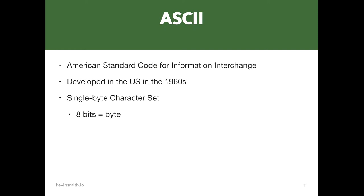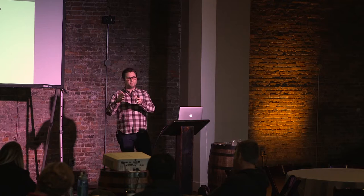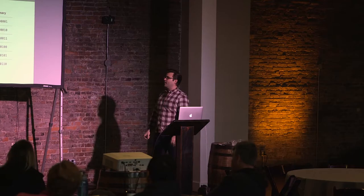ASCII has a total of 256 possible characters that can be mapped with a single-byte encoding — 256 possible combinations of ones and zeros. ASCII actually only makes use of 128 of those slots. The ASCII table shows it — if you see a certain string of ones and zeros, the computer knows that's an uppercase F.